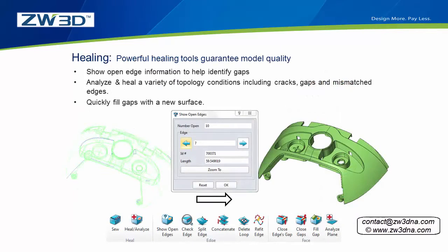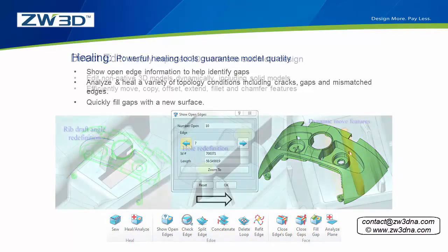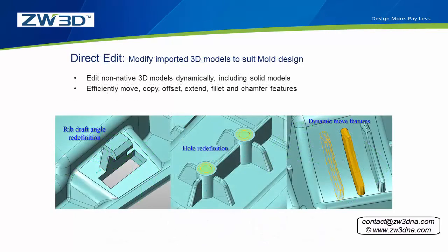Our healing tools allow you to detect and repair poor geometry conditions that often arise from cross-platform data translation. Direct editing means a quick and efficient method to redefine holes or add draft angle where required.